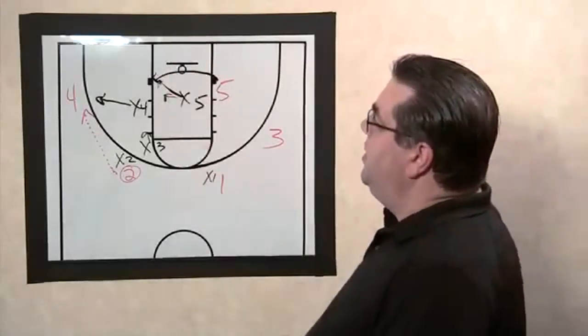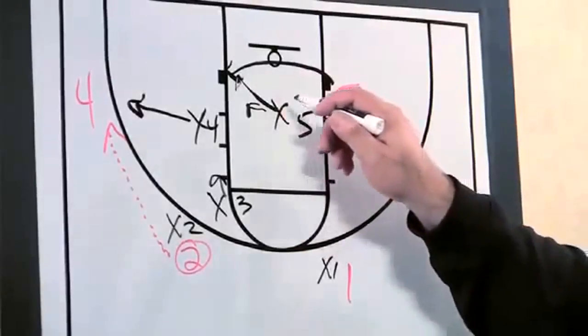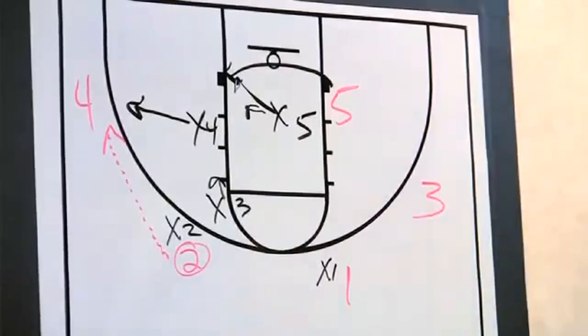You do not want to front in this situation because we do not have any backside help. So it's important that X5 comes over and plays aggressively in the low post, but does not front and allow them to throw the lob.